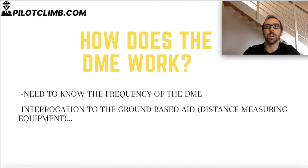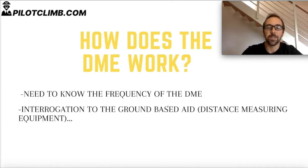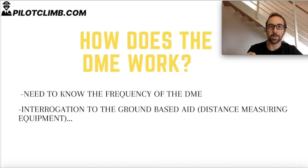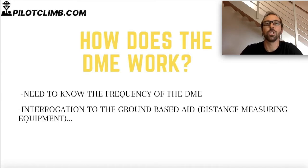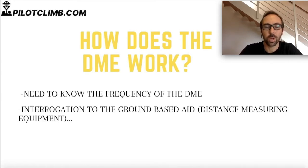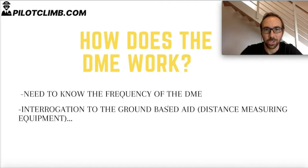We can draw a parallel here. Let's say each of us has a different phone number. If you don't select a frequency for the DME, it never works — in the same way that if you don't dial the number of the person you want to call, you will never reach them. It's not enough to press the green button; you need to put in a phone number. Similarly, you need to enter a frequency to get the distance information from the ground station you want.